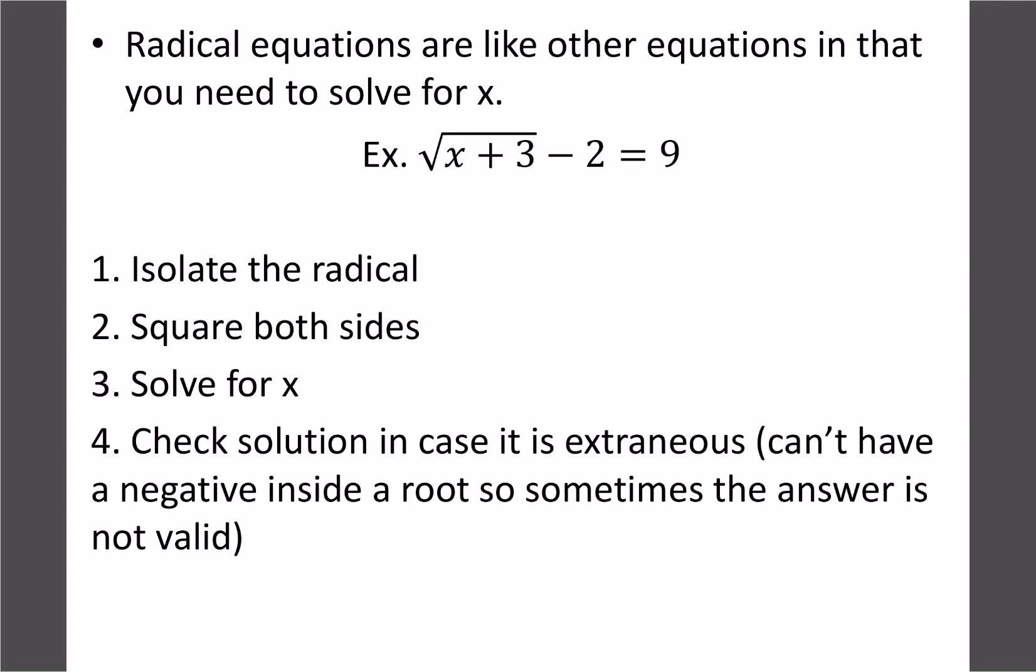When you have a radical in the equation, what we want to do is try to isolate that first. The logic is, if we can have a square root of something by itself, we can get rid of that square root by squaring it. We just saw that if we have root 3 times root 3, that's the same thing as root 3 squared, and that ends up just being equal to 3. So that's our goal with radical equations, is to try to get that square root gone, and to do that we just need to isolate it.